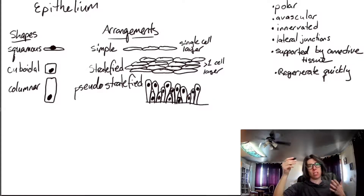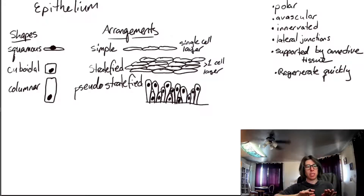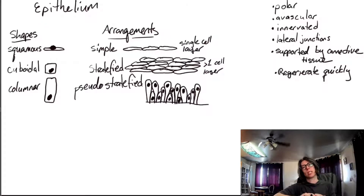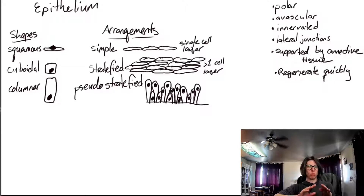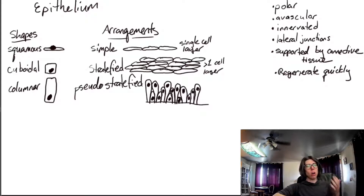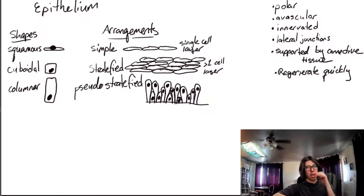To name epithelial tissues, you just name the different combinations of shapes and arrangements found in that tissue — simple squamous, stratified squamous, simple cuboidal, stratified cuboidal, and so on. Not all shape-arrangement combinations are really found in the body in high abundance, so I'm going to cover the most common types of epithelium found in the body and where you find them.